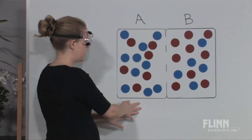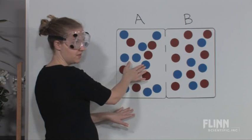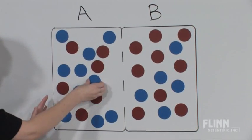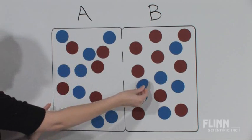So here, the water is more concentrated on side A, represented by the blue magnets, than it is on side B. So overall, the net movement is going to be of water from side A to side B.